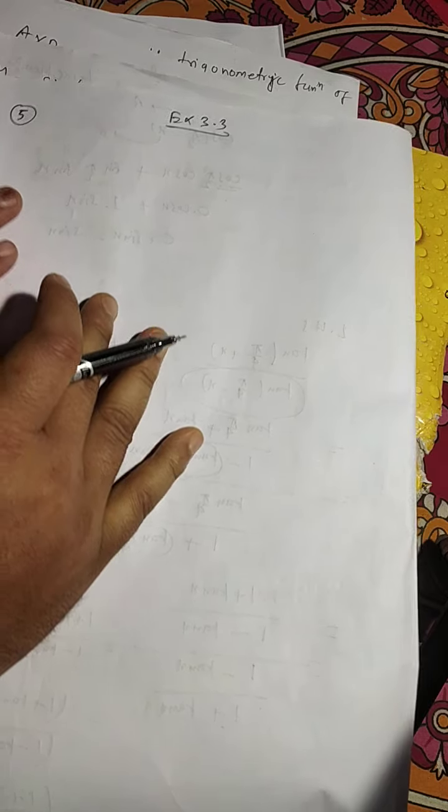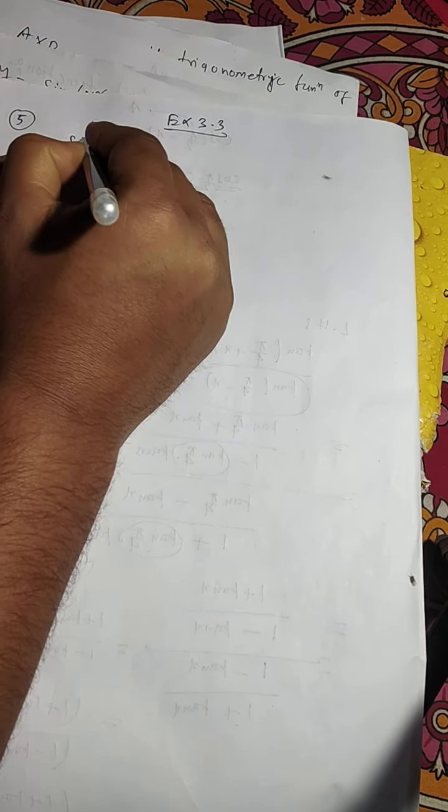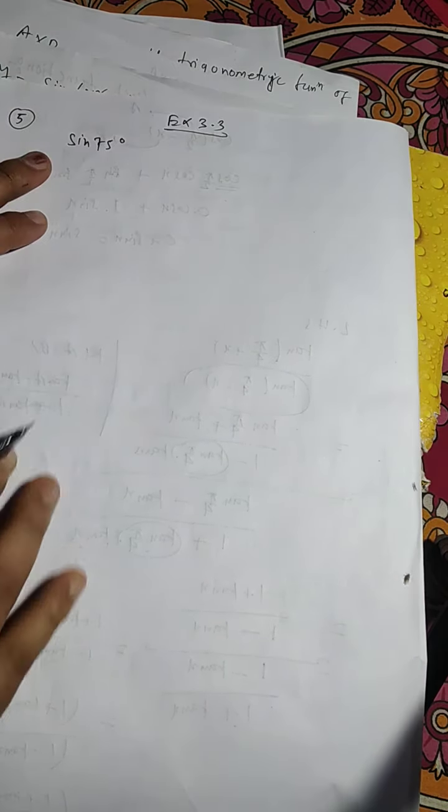Hello students. Today I am going to solve exercise 3.3. Question number 5 is: find the value of sin 75 degree.